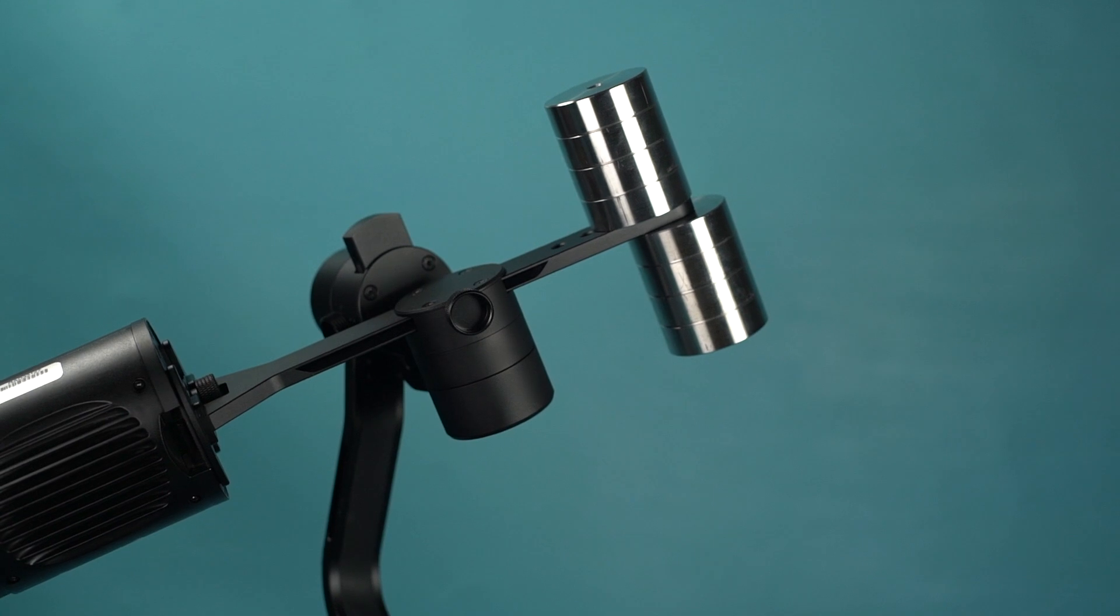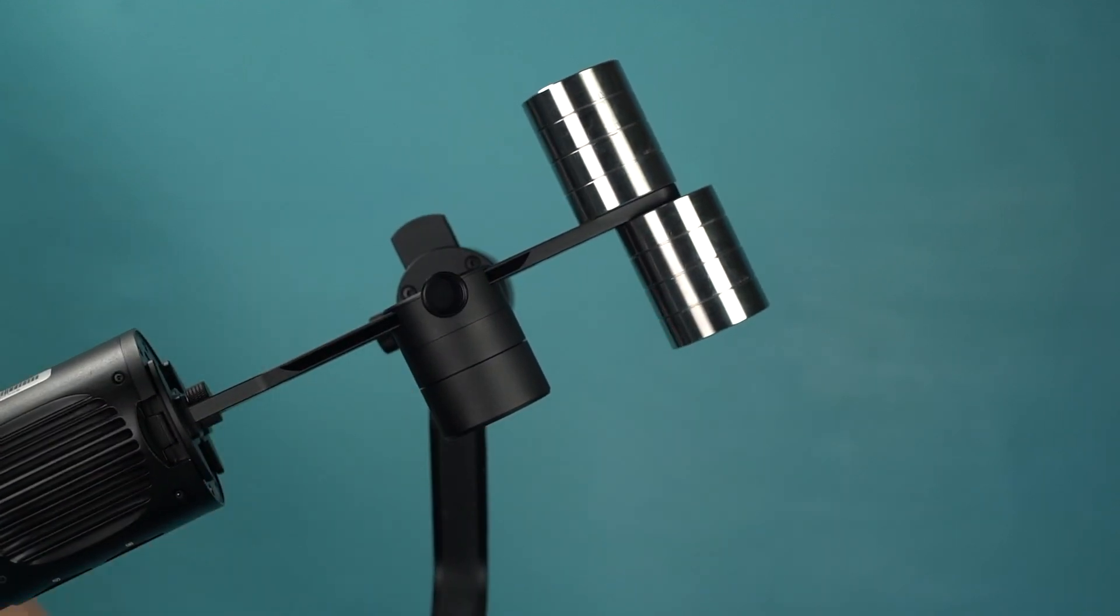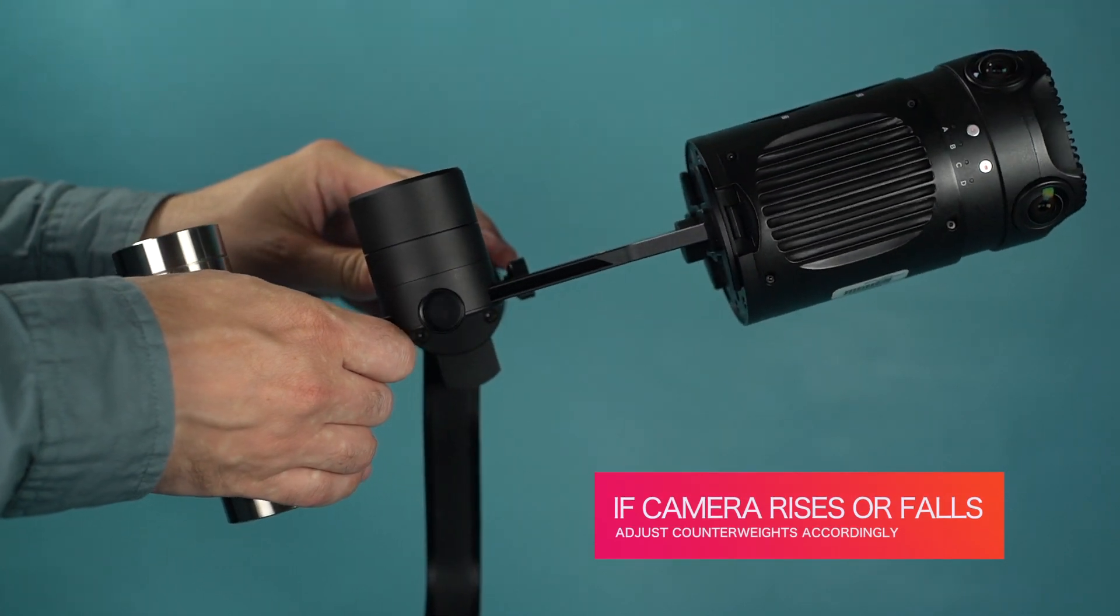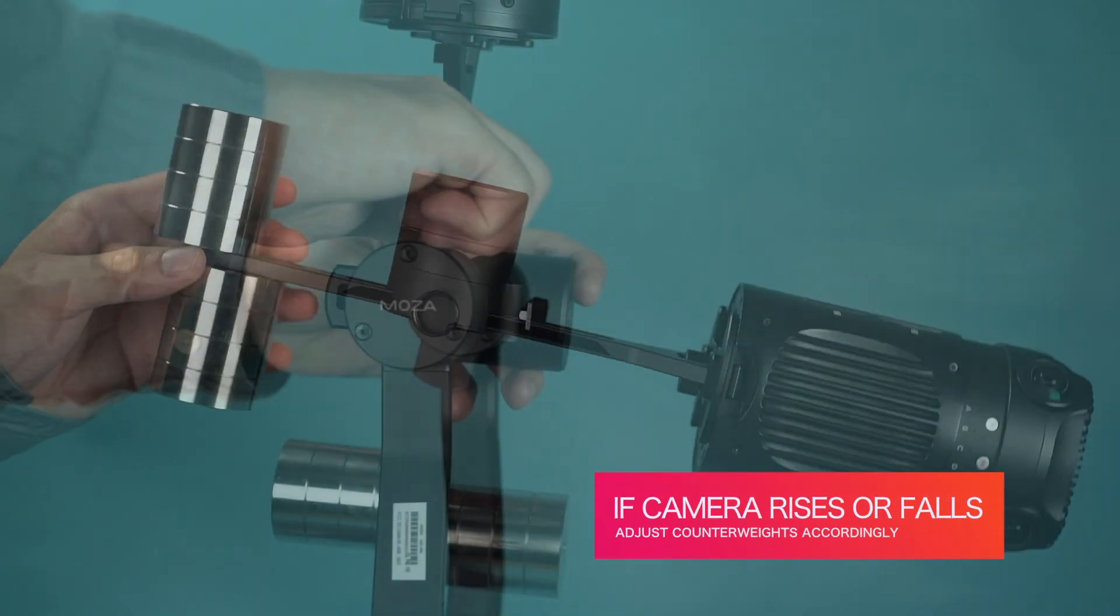To test the center of gravity, rotate the camera on the roll axis until it is horizontal. The camera should not rise or fall. If the camera rises or falls, adjust the counterweight stack accordingly.